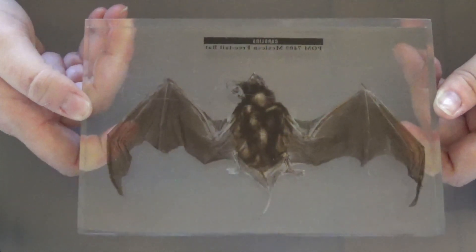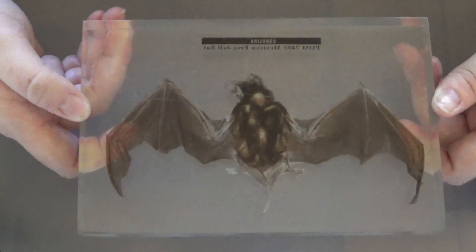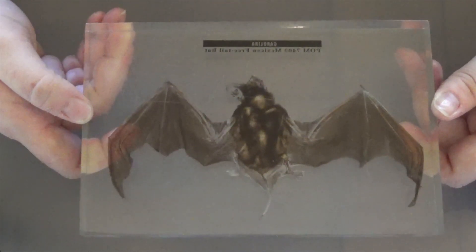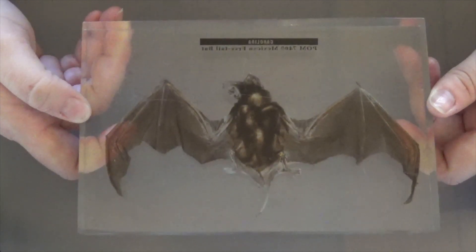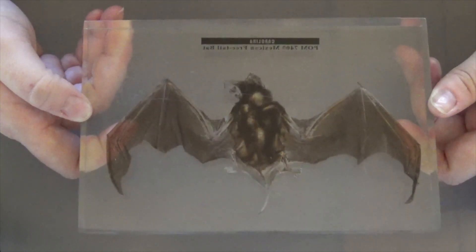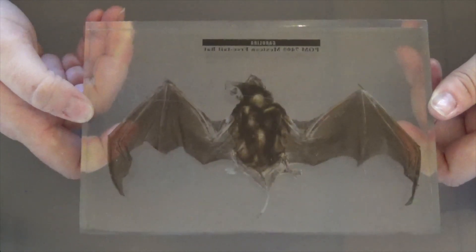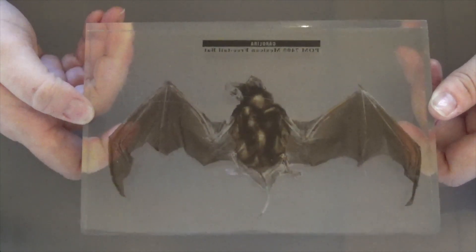Sometimes because the food that they eat isn't as available. Sometimes because the places that they live are kind of being turned into places for humans to go. So that's pretty unfortunate because if the bats continue to go, then some things that we love might continue to go too.